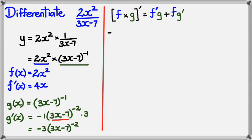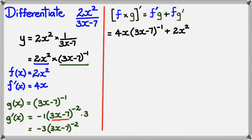Substituting these into the product rule: f-dash times g gives 4x times 3x minus 7 to the power of negative 1, plus f times g-dash gives 2x squared times negative 3 times 3x minus 7 to the power of negative 2.